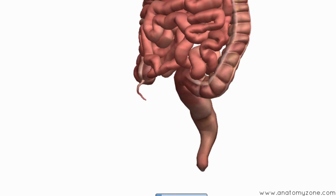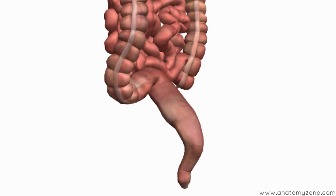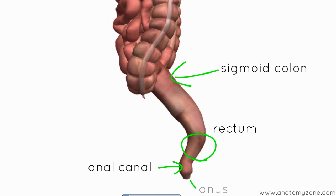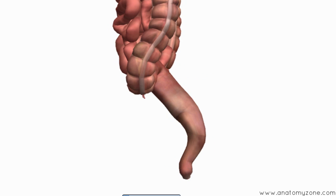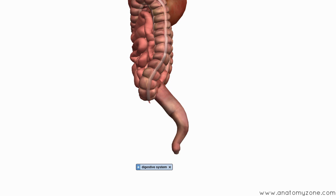After the sigmoid colon, you've got the rectum, then the anal canal, and the anus at the end. The rectum serves as a temporary holding site for feces, which is then expelled through the rectum into the anal canal and exits the body through the anus. Intra-abdominal pressure is increased to force out the feces from the rectum into the anal canal and finally out of the anus, which is the exit of the digestive tract.